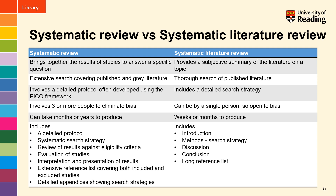It would have a very extensive reference list covering both included and excluded studies and detailed appendices showing the search strategies used on each database. Whereas with a systematic literature review you normally have fewer sections: introduction, the methods section would include the search strategy such as keywords used and databases searched, a discussion, a conclusion and a detailed reference list. You should discuss with your supervisor exactly what type of project they're expecting you to do just to make sure that you're both heading for the same result.